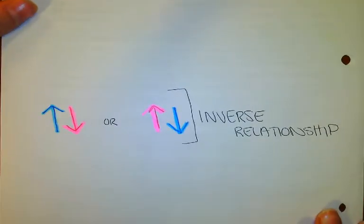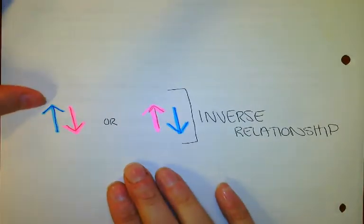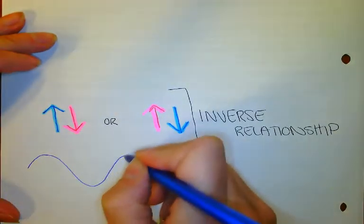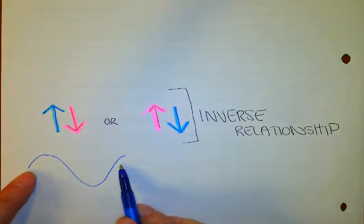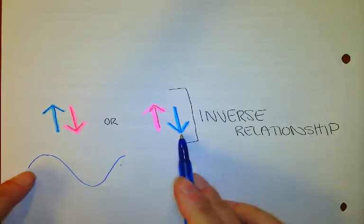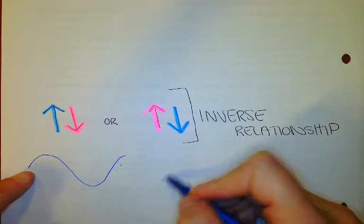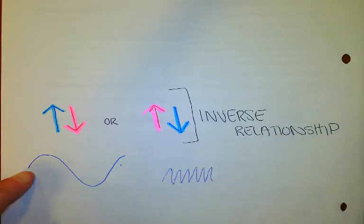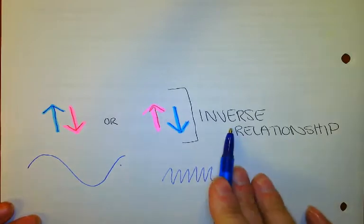Conversely, we can talk about inverse relationships. This is like wavelengths and frequency. If you have a long wavelength, it's not going to go by very frequently. Versus if you have a small wavelength like this, it's going to pass much more frequently.